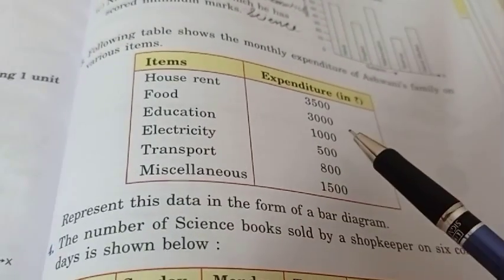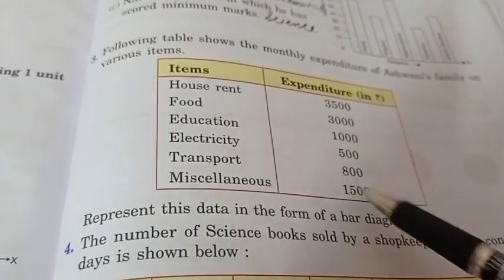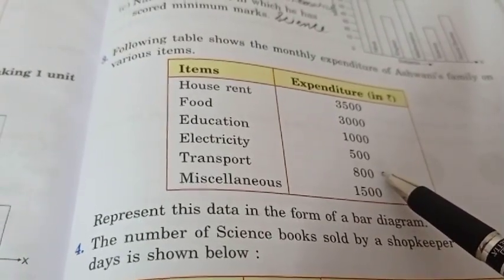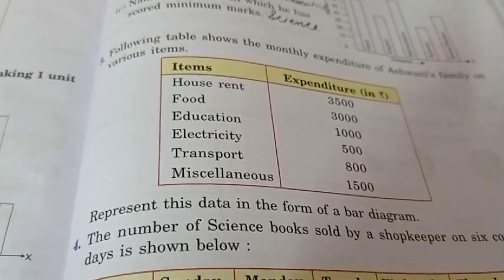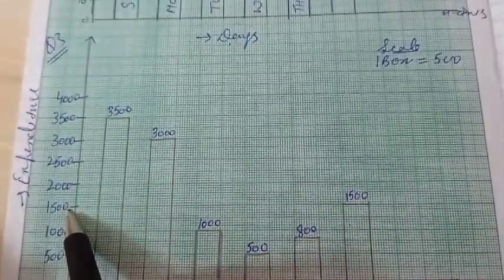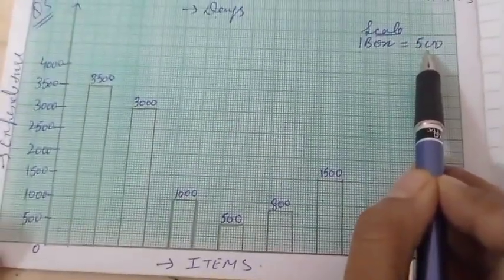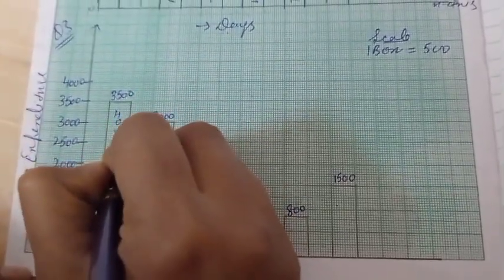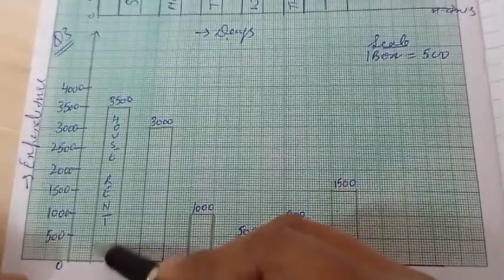Question 3: the following table shows monthly expenditure — house rent, food, and so on. First check the maximum value, which is 3,500. A gap of 100 would be very difficult to write up to 3,500, so I decided to take a gap of 500. Draw markings: 500, 1,000, 1,500, up to 4,000. Scale: one box equals 500. The first bar is house rent — 3,500, so leave one box and draw the bar up to 3,500.